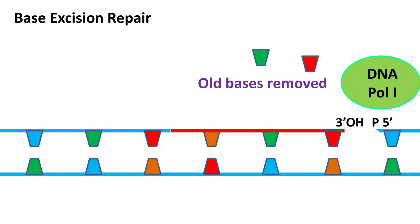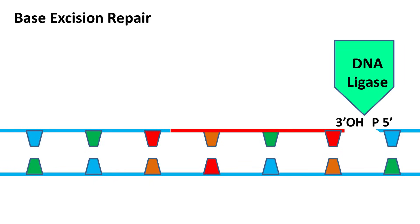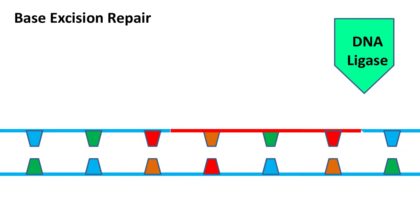To understand this mechanism of DNA polymerase, I suggest you watch the video on DNA polymerase I and nick translation at the end of this video. Once the activity of DNA polymerase is over, the remaining gap is sealed by DNA ligase through the formation of a phosphodiester bond.